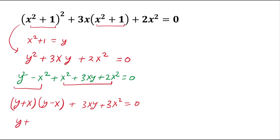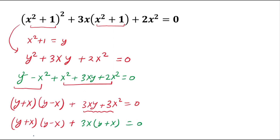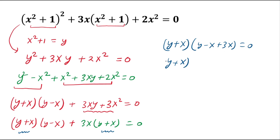Now we have (y + x)(y - x) + 3x(y + x) = 0. Look carefully: both terms share (y + x), so taking (y + x) as common gives (y + x)(y - x + 3x) = 0, which simplifies to (y + x)(y + 2x) = 0.